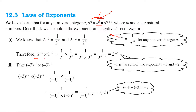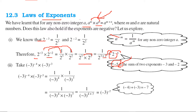So 2 to the power minus 3 into 2 to the power minus 2 is 1 by 2 to the power 3 multiplied by 1 by 2 to the power 2. Since these are positive, the powers will add: 1 by 2 to the power 3 plus 2, and when we take it to the numerator, this equals 2 to the power minus 5. So minus 5 is the sum of the two exponents. This law of exponents holds for negative numbers also.